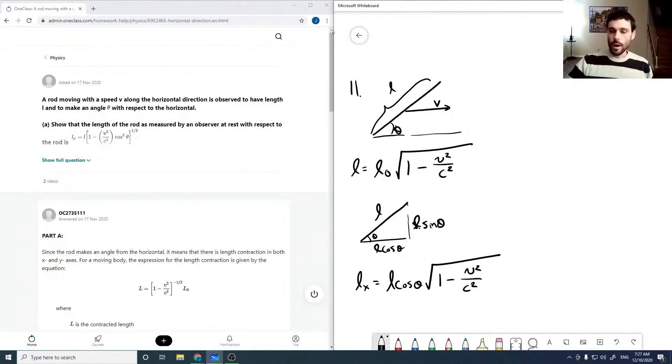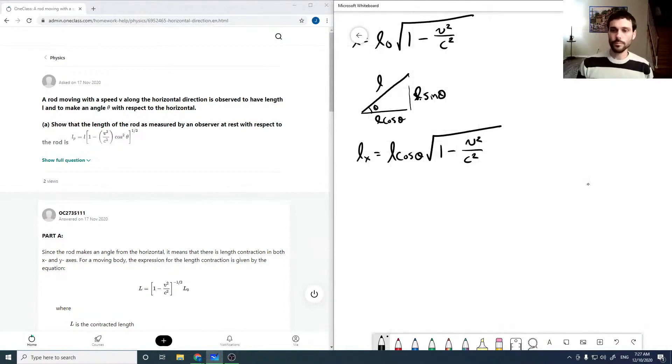And so our total rod's length is going to be L squared is LX squared plus LY squared. And our Y isn't going to be compressed, so this is going to be L squared cos squared theta, square root of 1 minus V squared over C squared, plus L squared sine squared theta.